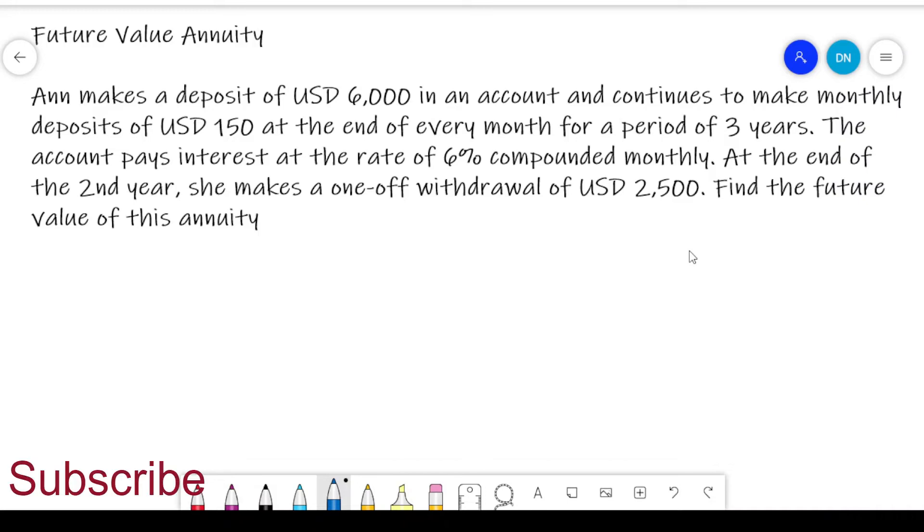Future value annuity. Anne makes a deposit of $6,000 in an account and continues to make monthly deposits of $150 at the end of every month for a period of three years. The account pays interest at the rate of 6% compounded monthly. At the end of the second year, she makes a one-off withdrawal of $2,500. Find the future value of this annuity.